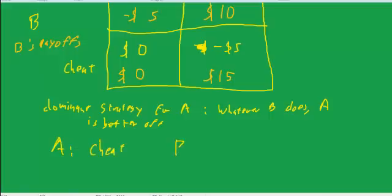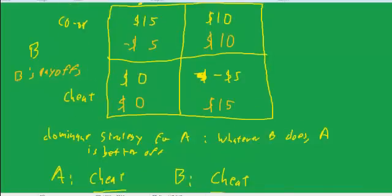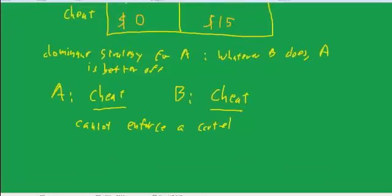And guess what the dominant strategy for B is? It's also to cheat. That is, regardless of what A does, B is better off cheating. So what that says is that the outcome of this game is likely to be both players cheat. What that means is you cannot enforce a cartel. If these are the payoffs, it would be very difficult to enforce a cartel. There's too much incentive for people to cheat.